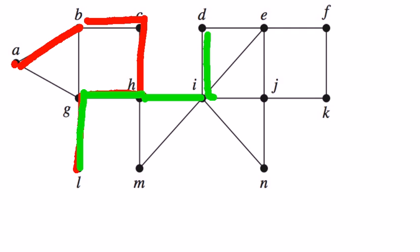Continuing, we go to D, E, F, K, J. And at J, remember we cannot go to E or I because they have already been visited. So let's go to N.